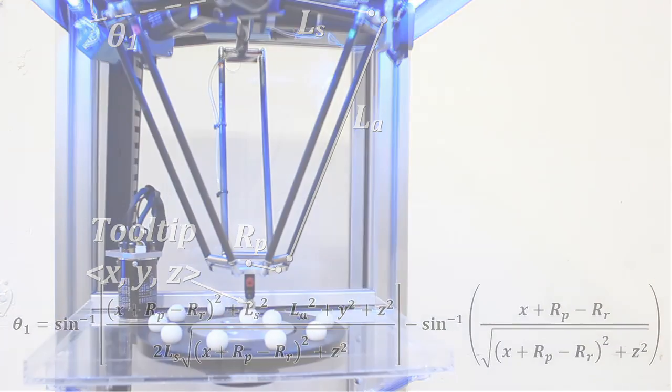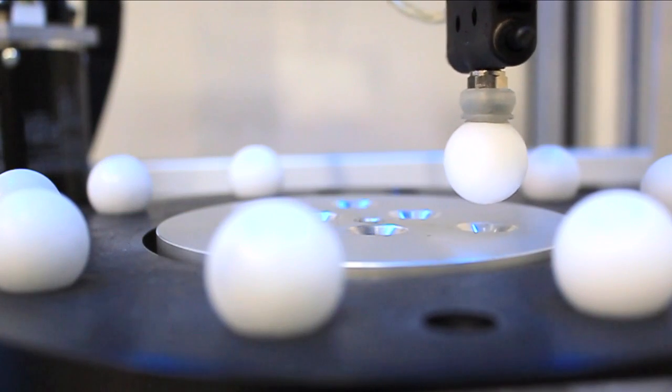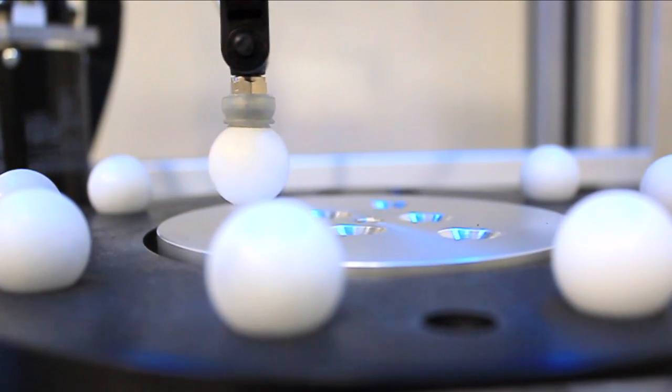You can set up kinematics easily by programming the mathematical relationship between the motor positions and the axis positions into the forward and inverse kinematics subroutines, which PMAC will then run automatically at the rate you specify.